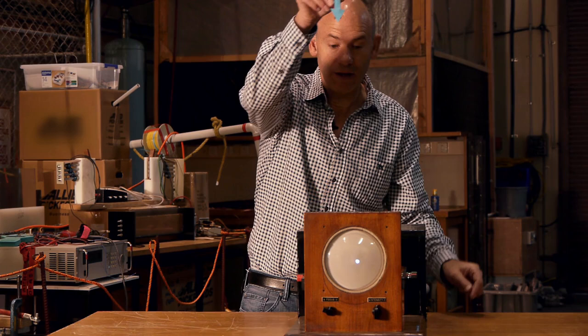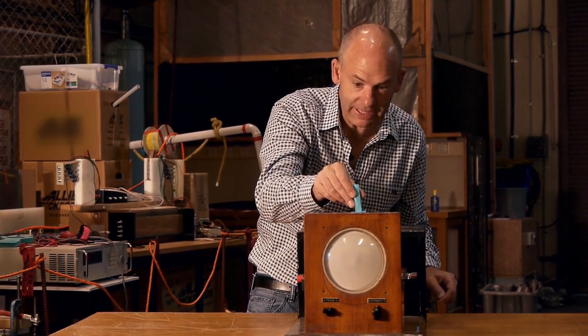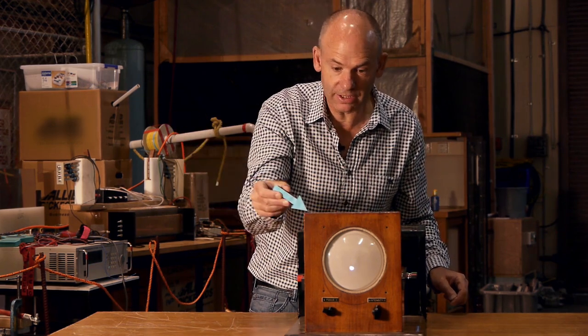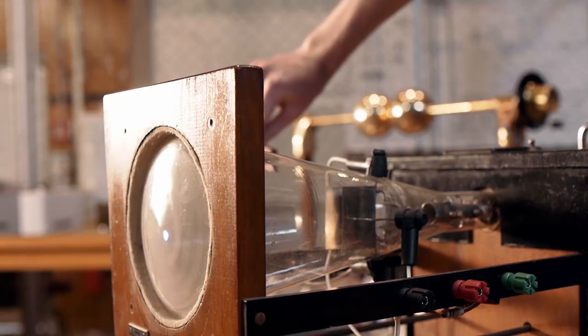And if I bring the magnetic field down from the top, the electron beam is deflected to the side. And it doesn't matter what angle I bring the field, the electron beam is always deflected at right angles.